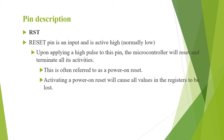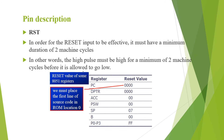Activating power-on reset will cause all the values in the registers to be lost, so the reset pin should be logic 0 for program execution to start. In order for the reset to be effective, it must have a minimum duration of 2 machine cycles — the high pulse must remain high for a minimum of 2 machine cycles before it is allowed to go low.